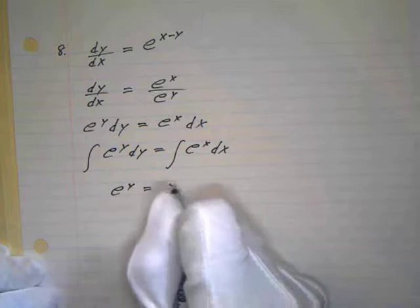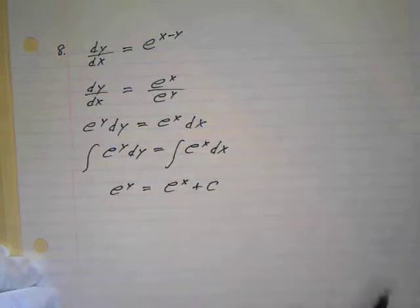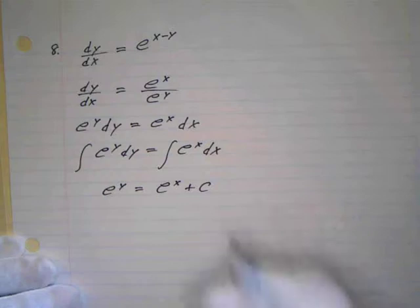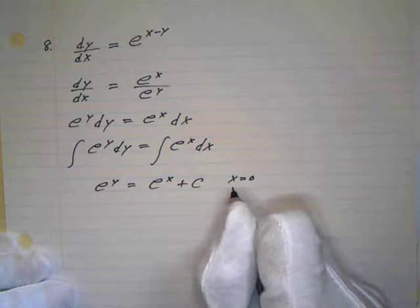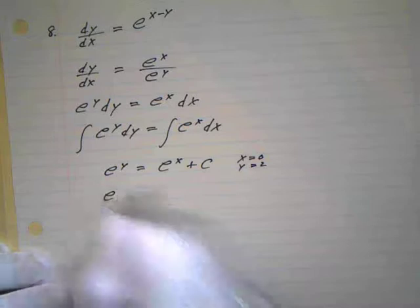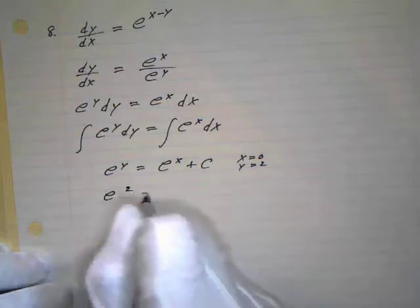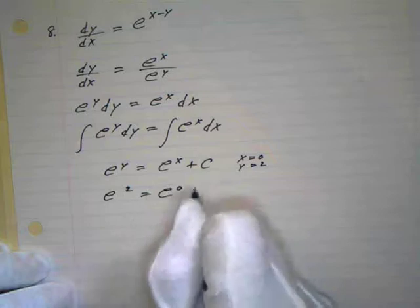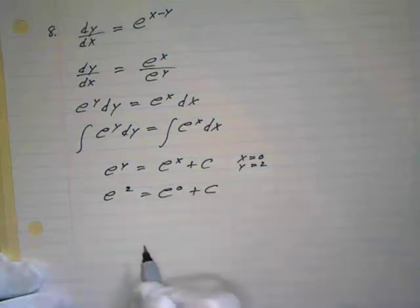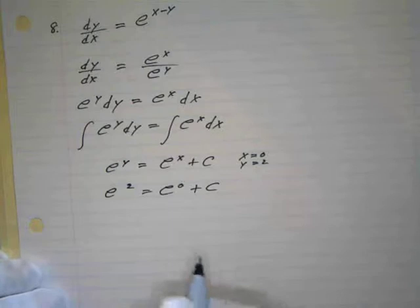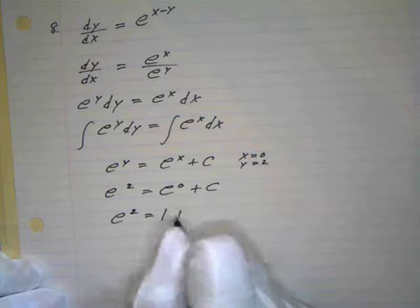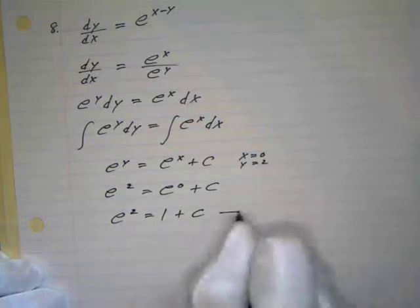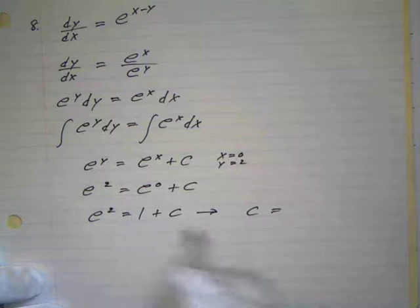We get e to the y equals e to the x plus c. Now we apply the initial conditions: x equals zero and y equals two. Substituting in, e squared equals e to the zero plus c, so e squared equals one plus c, which implies c equals e squared minus one.